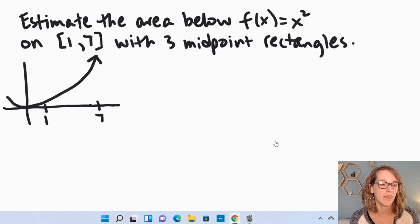In our example here, we have x squared on the interval 1 to 7, and I've got that written down in my diagram. We're going to use three midpoint rectangles. So the first thing that I want to do is to set up what my area is going to look like.